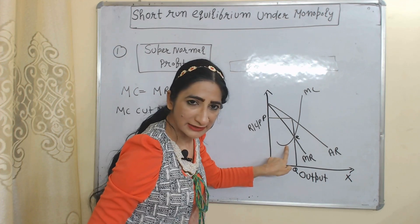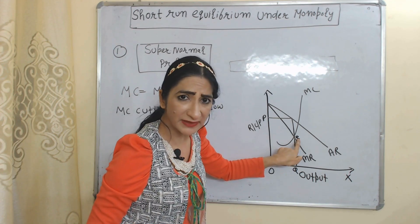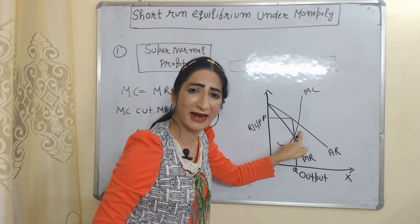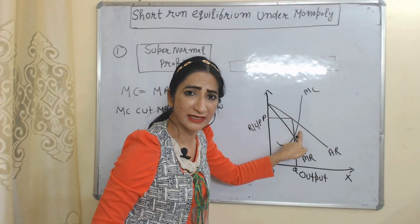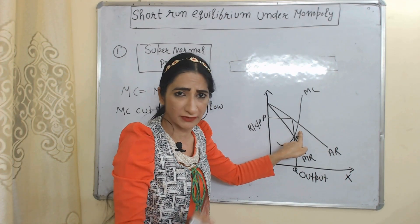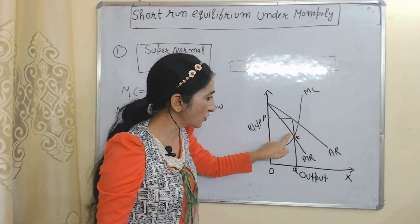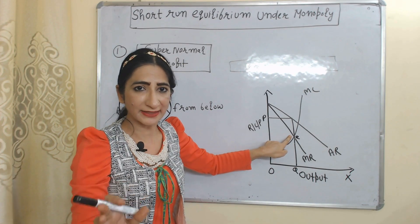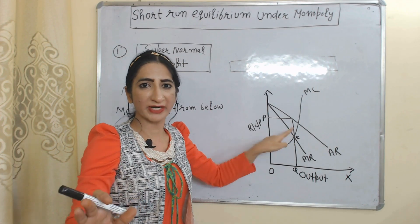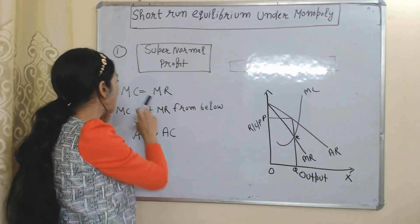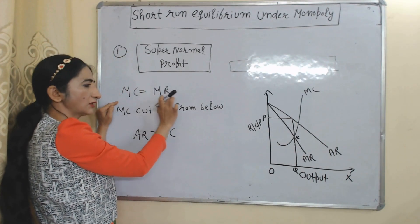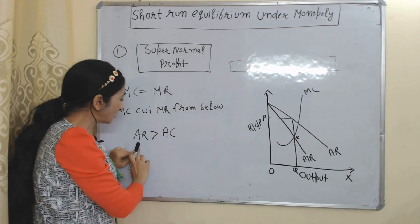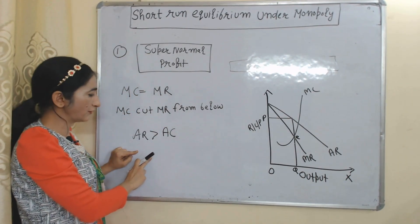That means E is a stable equilibrium point. After point E, marginal cost starts increasing, which is why further production will not be beneficial for the producer. At this equilibrium point, both conditions are satisfied: MC equal to MR, and MC cuts MR from below. The third condition of super normal profit is that average revenue is more than average cost.